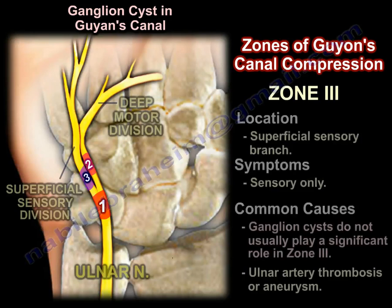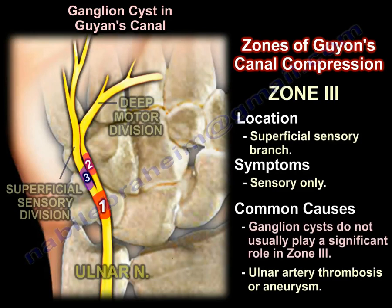Zone 3 is located on the superficial sensory branch, and you get sensory involvement only. The ganglion cyst does not usually play a role in zone 3. It is usually ulnar artery thrombosis or aneurysm that causes the compression in zone 3.